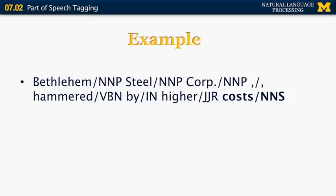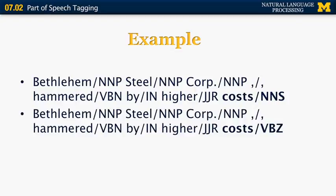Let's look at an example: 'Bethlehem Steel Corporation hammered by higher costs.' Here the word 'costs' is labeled as NNS, noun plural. Compare with a sentence where 'costs' is labeled as a verb. Given that both tags are valid interpretations, how do we know which to pick? One possible approach is to use baseline probabilities — look at how many times 'costs' has been labeled as a noun versus a verb in training data and pick the more frequent one. This is essentially a unigram POS tagger.